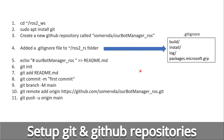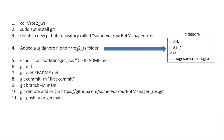Here are the steps I followed to set up my Git and GitHub repository — I'll include them in the description. First I changed into my ROS2 workspace directory and did a sudo apt install git. I created a new GitHub repository called our bot manager underscore ROS. Back on the Raspberry Pi I added a .gitignore file, ignoring the build, install, and log folders and the Microsoft packages file. Then I echoed a README.md file.